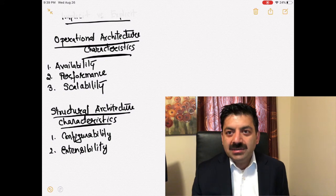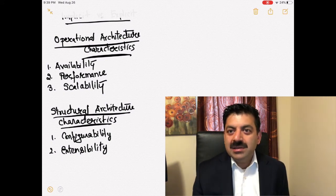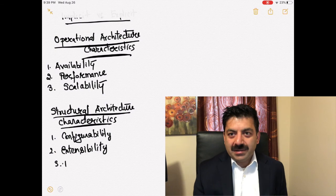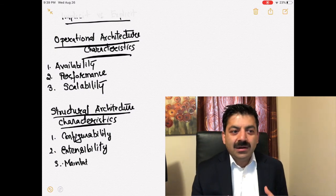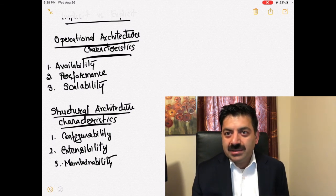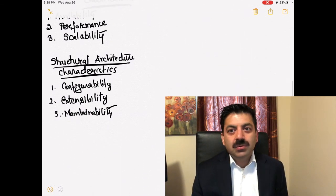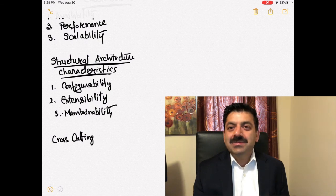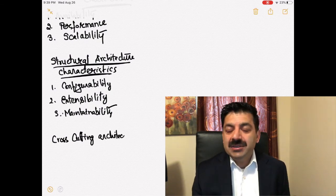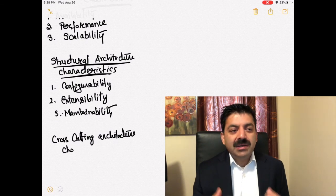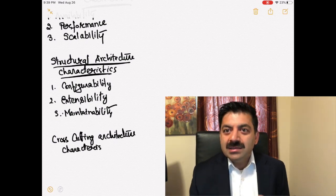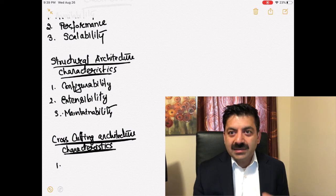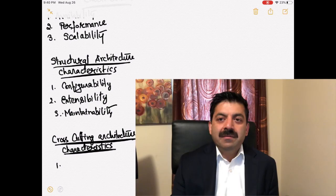Then comes cross-cutting architecture characteristics. These cross-cutting architecture characteristics are common to all applications. The example would be usability, they should be easy to use. And all the applications need some kind of security, authentication. Generally, most of the time the authentication and authorization are central services which every application uses to authenticate and authorize the access to your application.